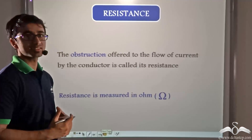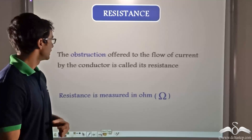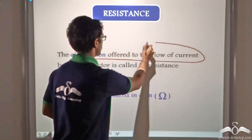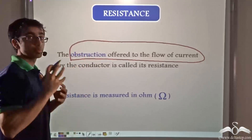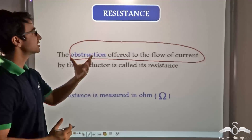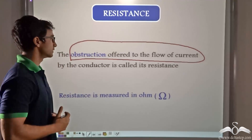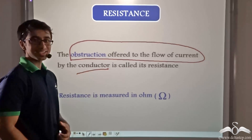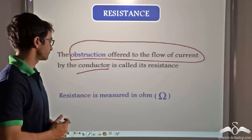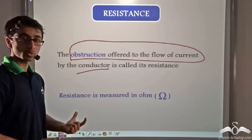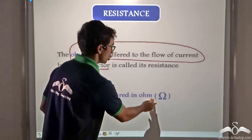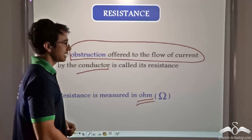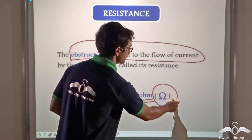Resistance can be defined as the obstruction offered to the flow of current. The obstruction offered to the flow of current by the conductor is known as the resistance of the conductor. Resistance is a measurable quantity and it is measured in ohms. Ohm is the unit of resistance and it is denoted by the symbol omega (Ω).